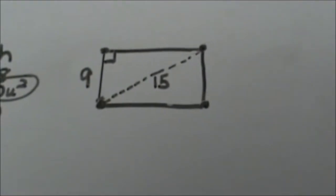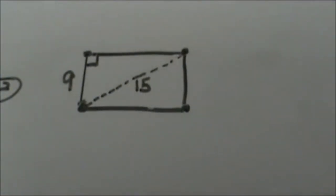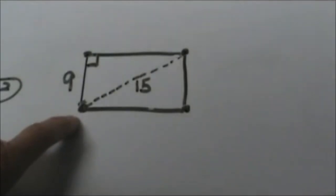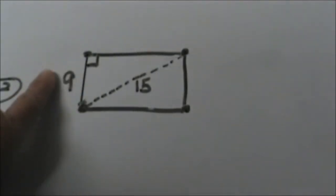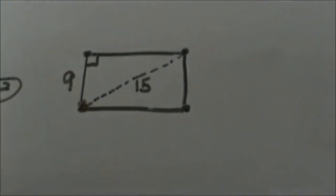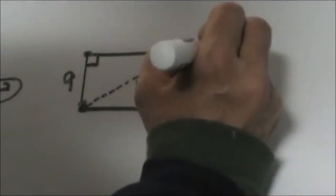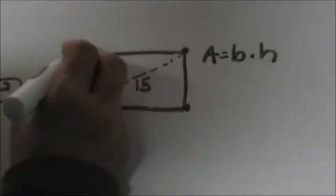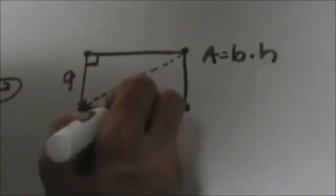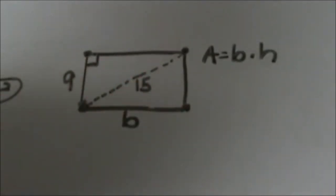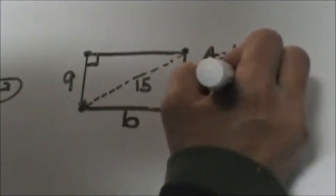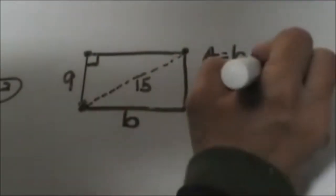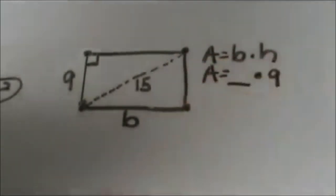Now let's look at an example of a rectangle where you're given the diagonal and one side and you need to find the area. So remember the area formula is base times height. We know the height but we don't know the base so we need to solve for the base given that we have the diagonal. So let's plug in what we know so far. We don't know the base so let's leave that blank and let's plug in 9 for the height.